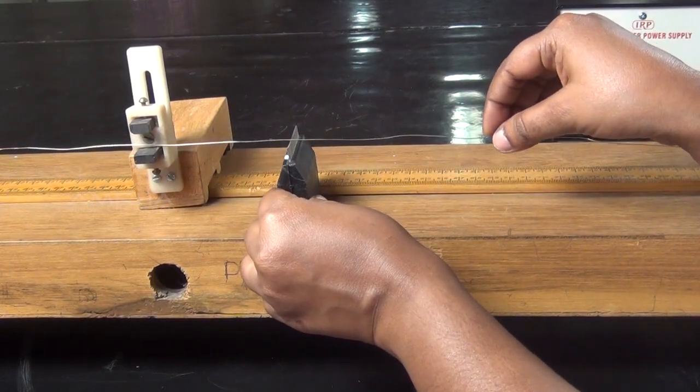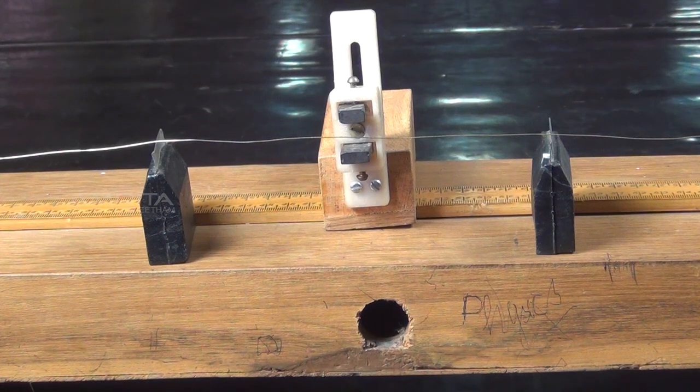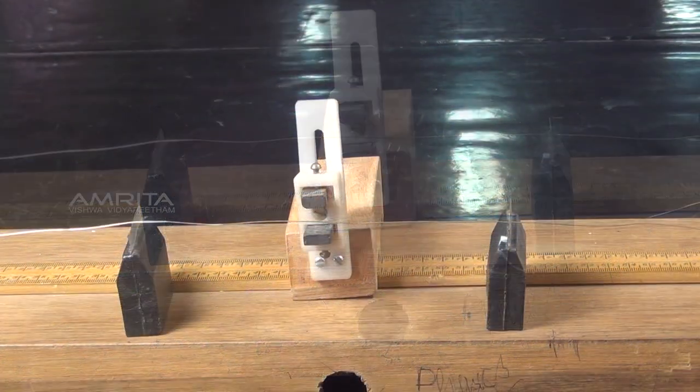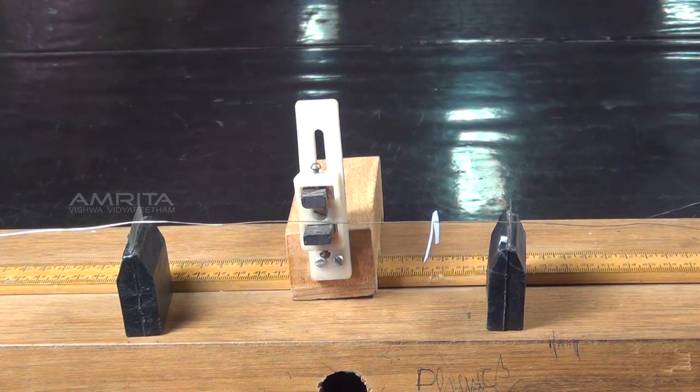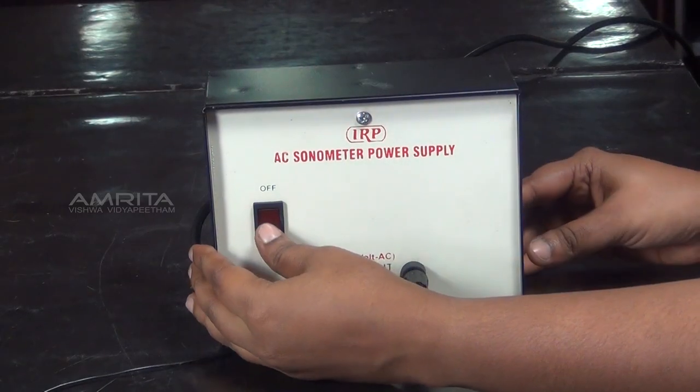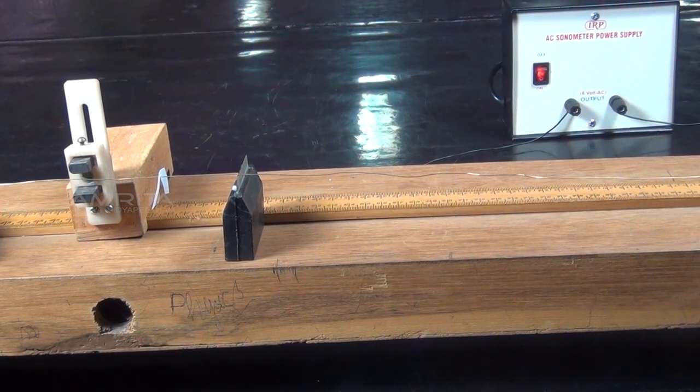The bridges are placed on either side of the magnet at equal distance from the magnet and are close to each other. A light paper rider is placed on the wire between the bridges of the sonometer. The AC supply is switched on.